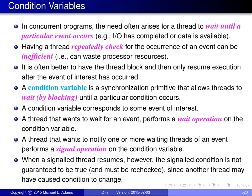A condition variable is a synchronization primitive that allows threads to wait by blocking until a particular event occurs. There are two basic operations associated with a condition variable: a wait operation and a signal operation. A thread that wants to wait for an event performs a wait operation on the condition variable, which will block the thread until it's awoken. A thread that wants to notify one or more threads of an event performs a signal operation on the condition variable, which will awaken the signaled threads.